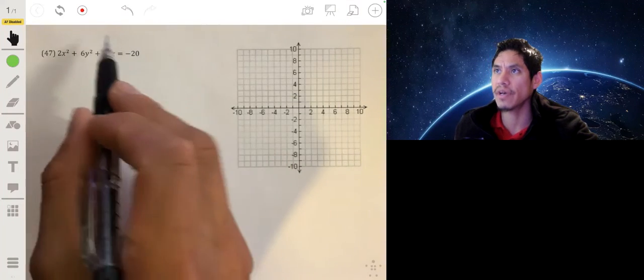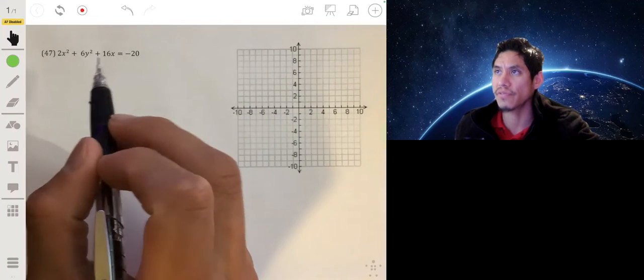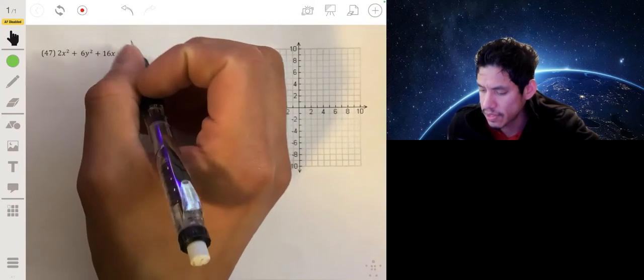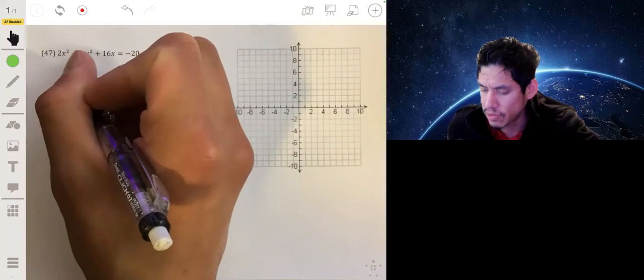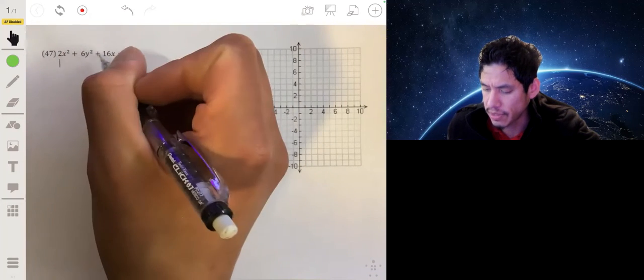Okay, so we want to identify what type of conic section this equation is. For that we're going to complete the square, and what I would recommend is to first just group the x terms and y terms together.